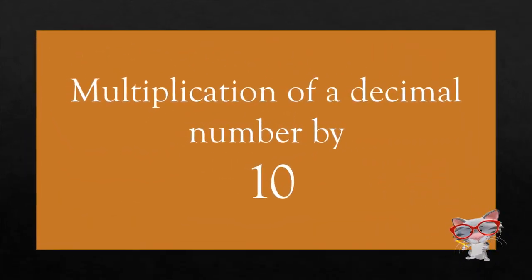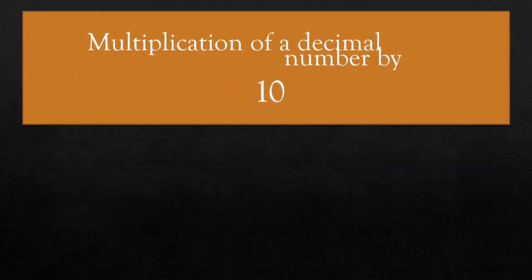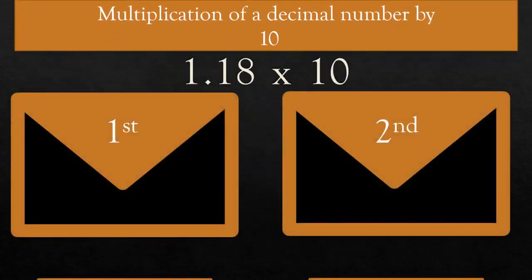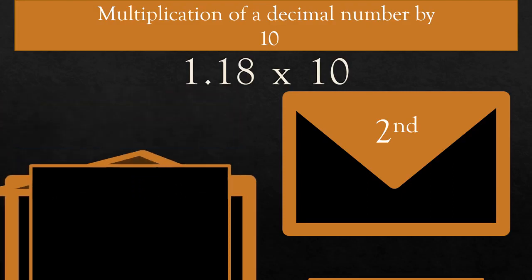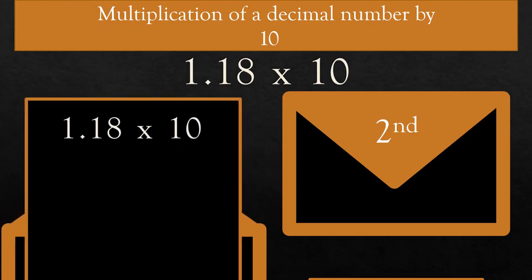Let us study Multiplication of Decimal Number by Ten. For example, 1.18 × 10. There are two ways to solve this question; you can use any one of the methods. First way: if we multiply 1.18 × 10, the decimal point shifts one place to the right. So the answer is 11.80.